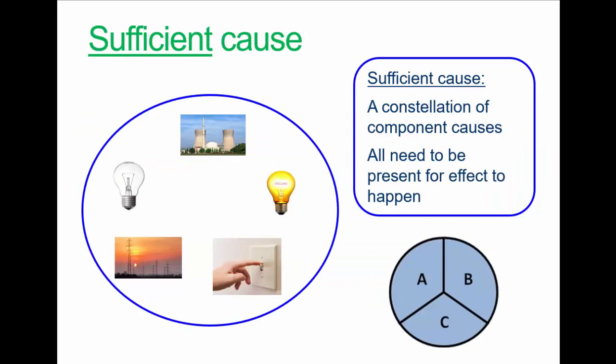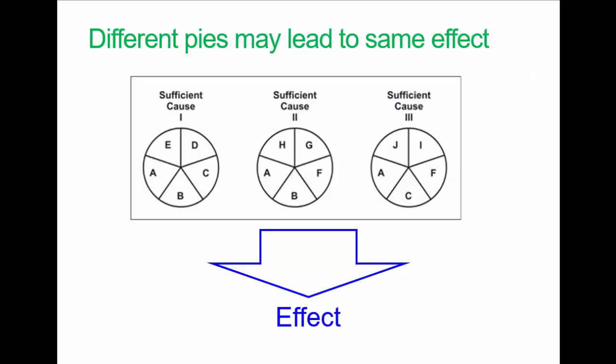Another definition: sufficient cause in the causal pie model. This represents a way of conceptualising causality. A sufficient cause is a constellation of component causes — the causal pie — that leads to an outcome. We draw it so that A, B, and C are factors which may increase the rate of a particular disease. One outcome of this model is that different pies — that is, different collections of causal factors — may lead to the same outcome.